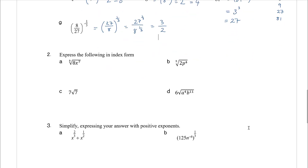Question two: express each of the following in index form — no roots, only indices. Cube root of eight x to the seven: that is eight x to the seven, all to the power of a third. Eight to the power of a third is two, and x to the power of seven times one third is x to the seven thirds, so the answer is two x to the seven thirds. Fifth root of two p to the four: that is two p to the four, all to the power of one fifth, giving two to the one fifth times p to the four fifths.